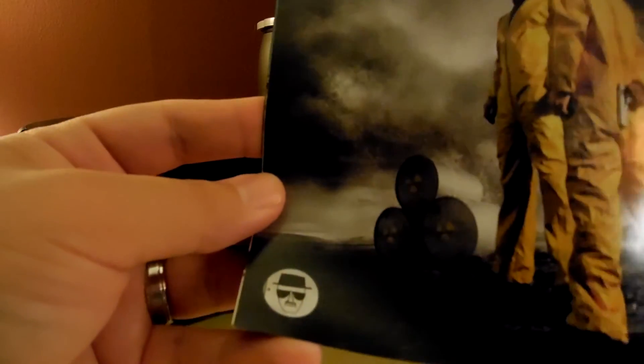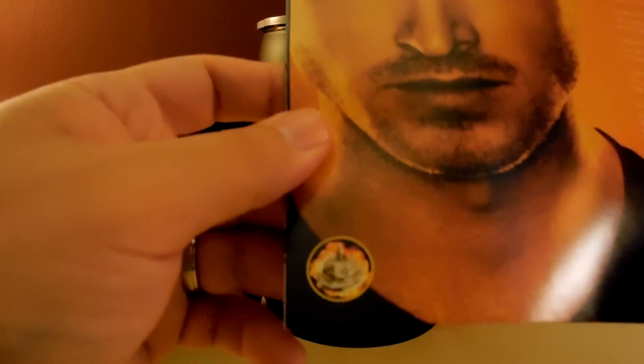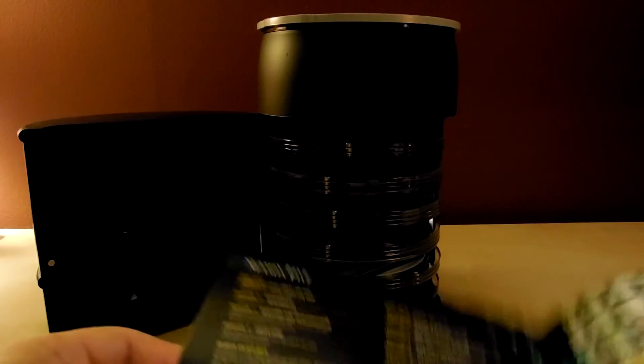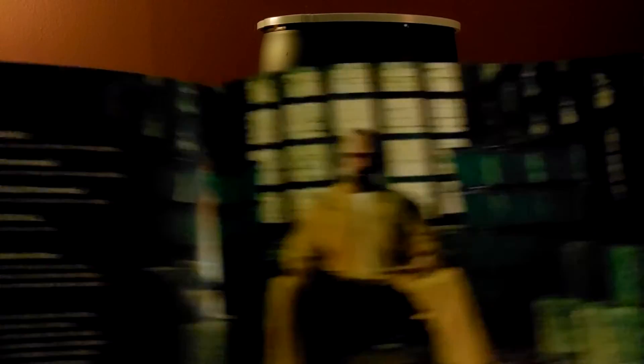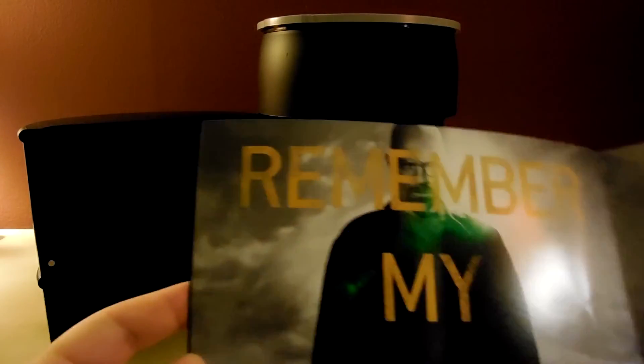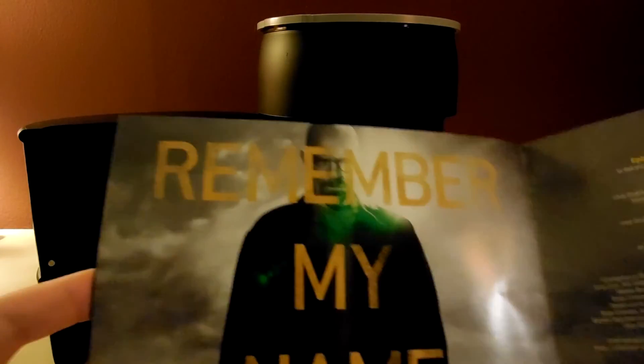Season two with Walt and Jesse. That is the teddy bear in the pool. Season three, and that's the picture of Heisenberg. Season four, and that's the picture of the bell. Season five, picture of Walt there, and that's the picture of the tarantula. Remember my name. I love that. And then the final season, or season five point two, or season six, or whatever you want to call it. The picture of the keys.